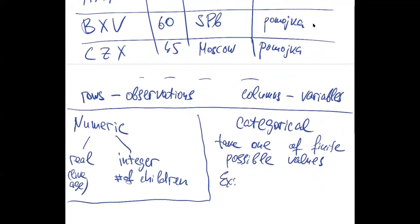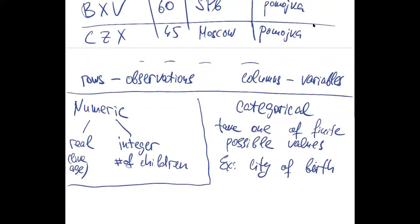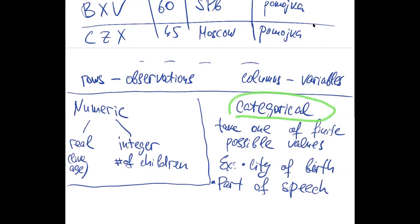Examples: city of birth, or if we are considering a linguistic data point — for example, a word — then this word can have categorical variables such as part of speech. Before we get any data, we understand what kind of values this variable can take.